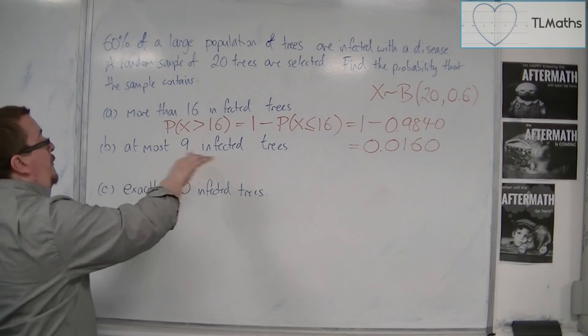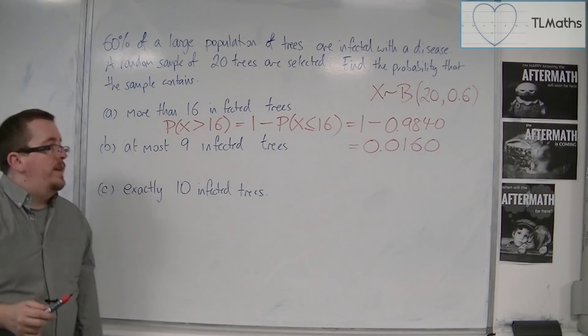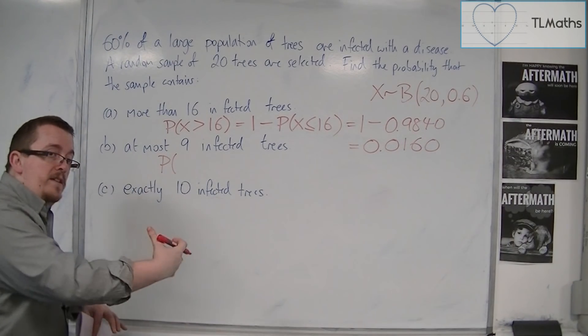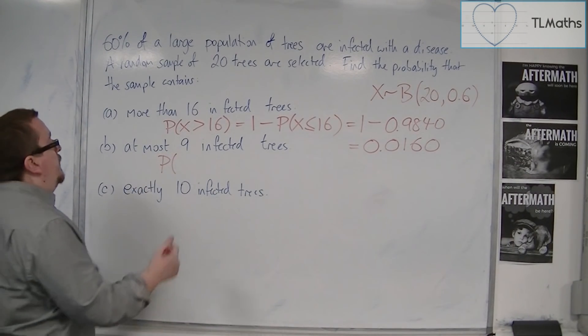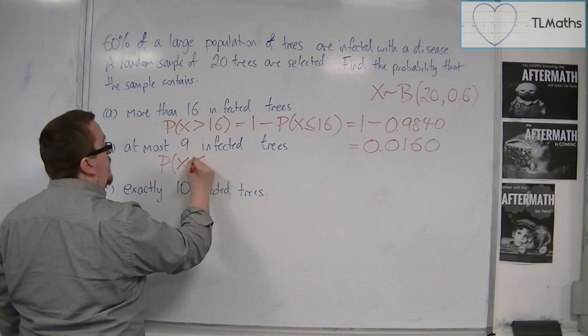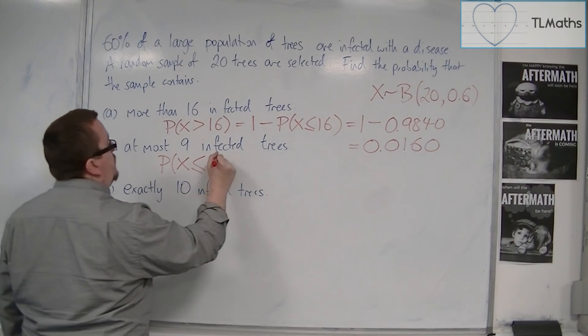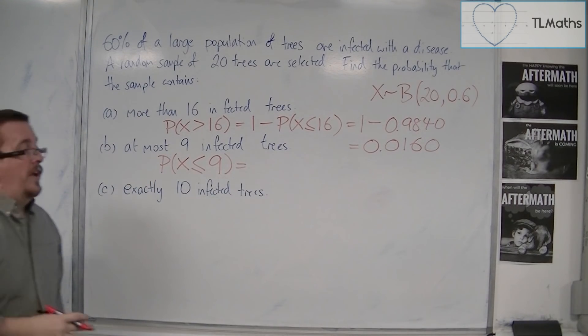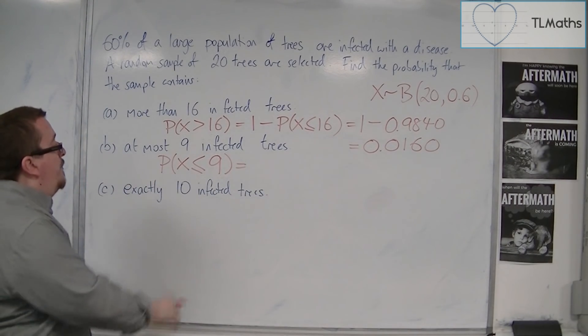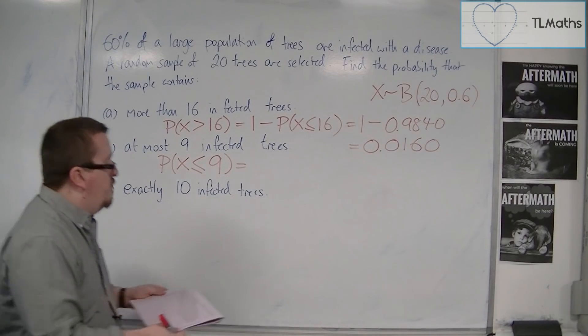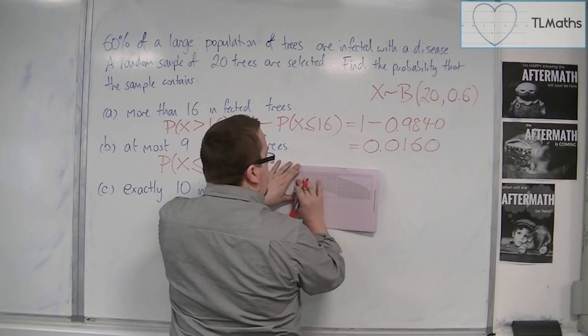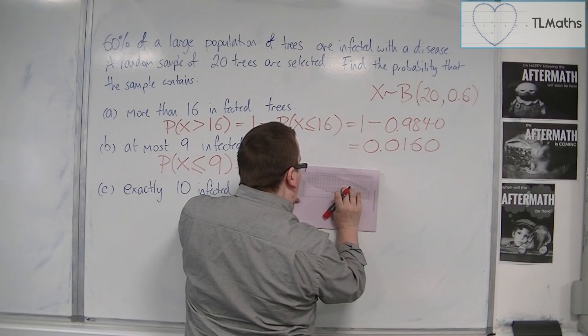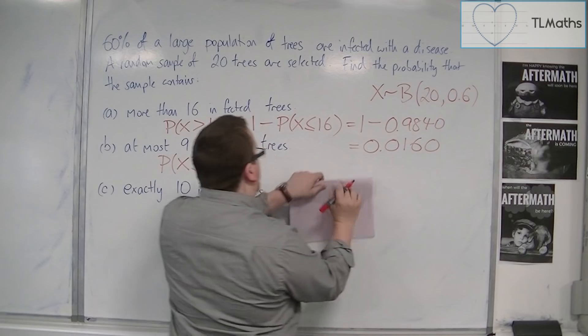If we want, at most, 9 infected trees, then I want up to 9, but no more. So X has to be less than or equal to 9. This one I can look directly up at the tables, because it's already a less than or equals to problem. So N is 20 again, 0.6. Then we go to 9, and that's 0.1275.